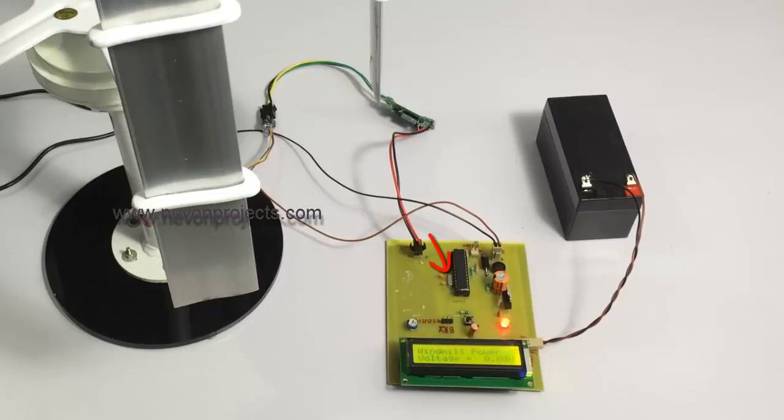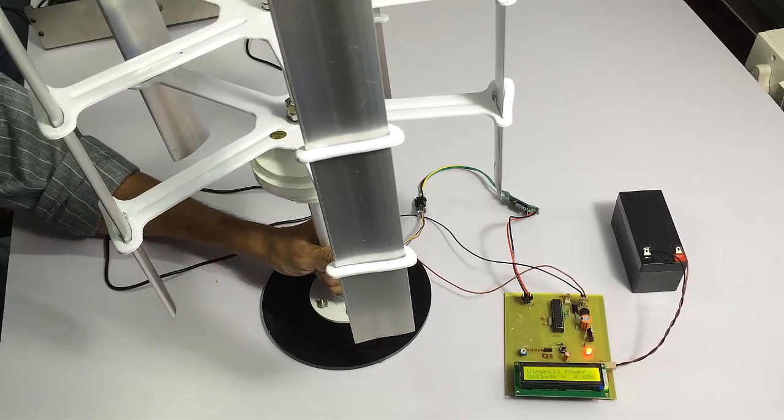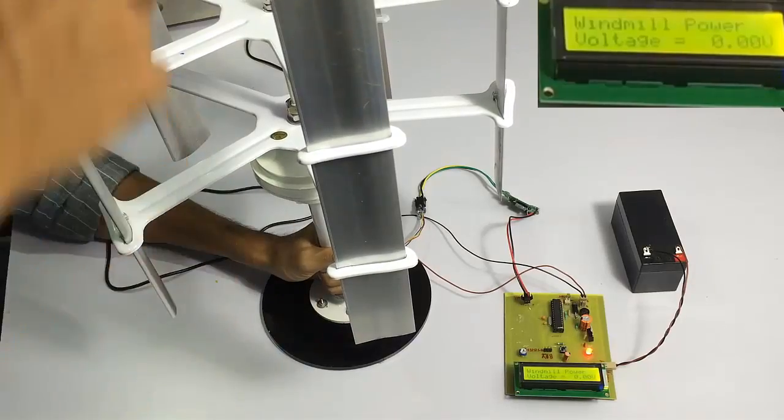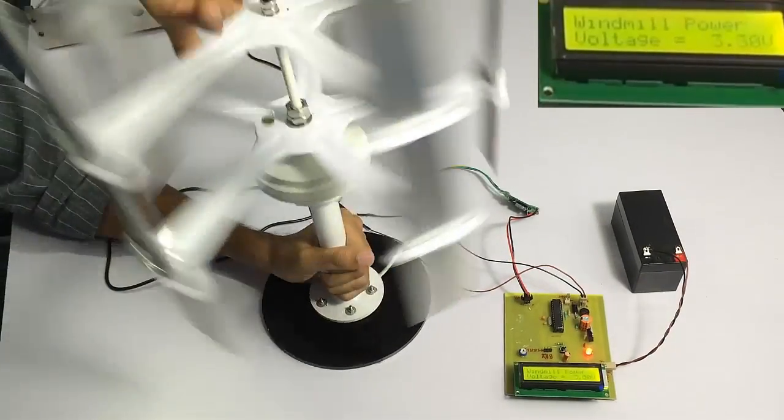For the circuit, we have used an ATmega microcontroller along with an LC display. This circuit is used to charge the battery and monitor the voltage. We will now manually rotate the windmill to check the voltage generated.